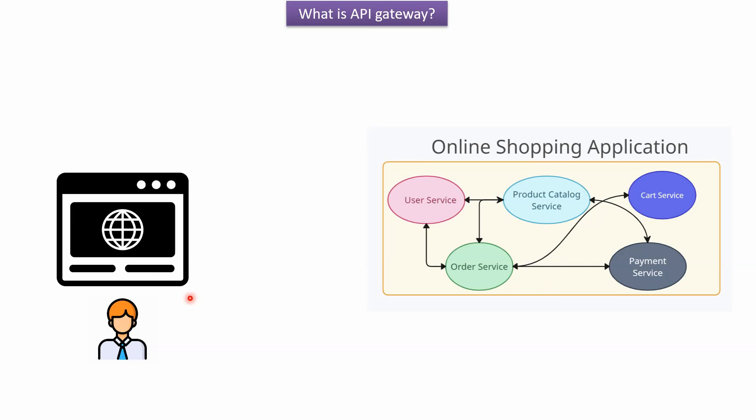On the left side you can see the UI developer. Suppose the UI developer wants to list users, create a user, or delete a user — then the UI developer needs to make a call to the user microservice. If the UI developer wants to list products with their price, then they need to make calls to the product catalog service. For different functionalities, the UI developer needs to make calls to different microservices, and this will be a problem. If a new microservice is added, an existing microservice is modified, or removed, the UI developer needs to make code changes in the UI, which will be tedious. To avoid that, we can introduce API Gateway.